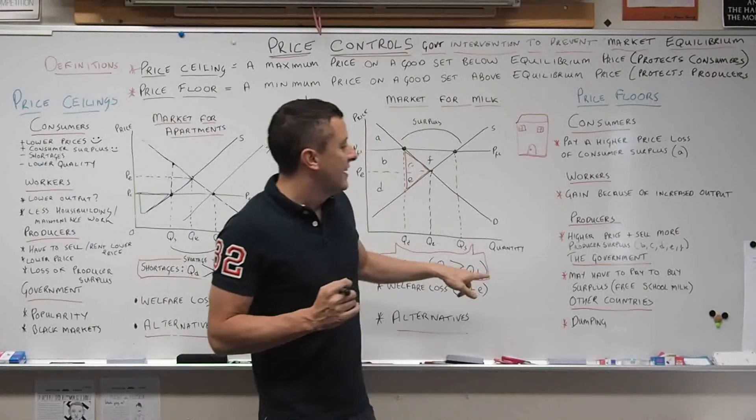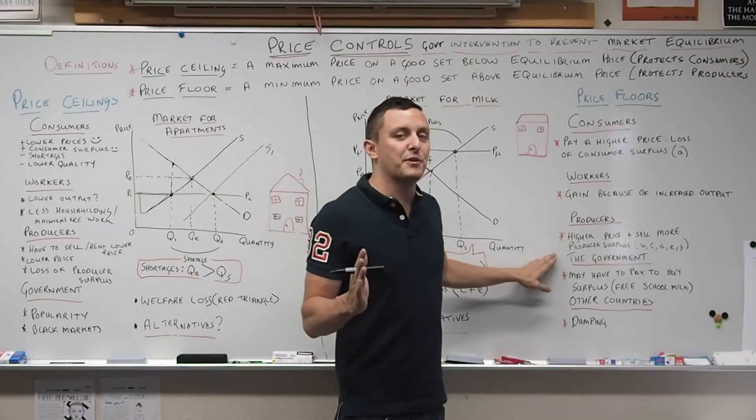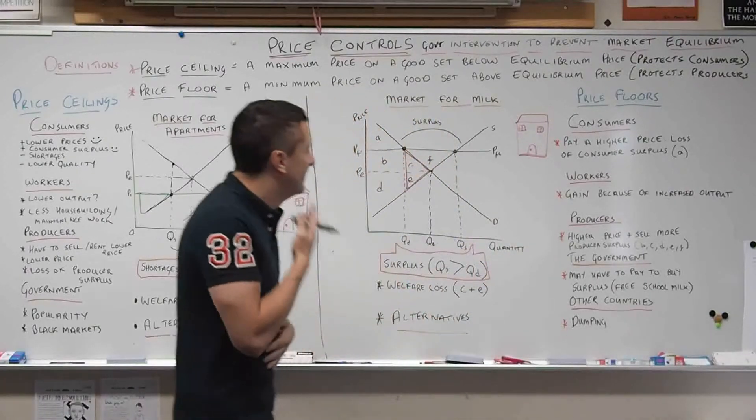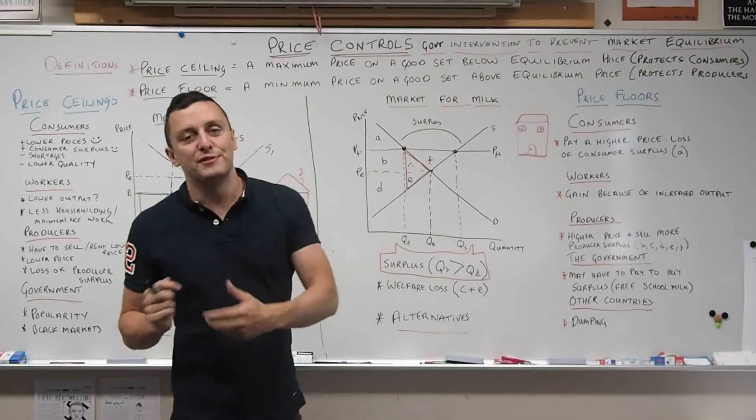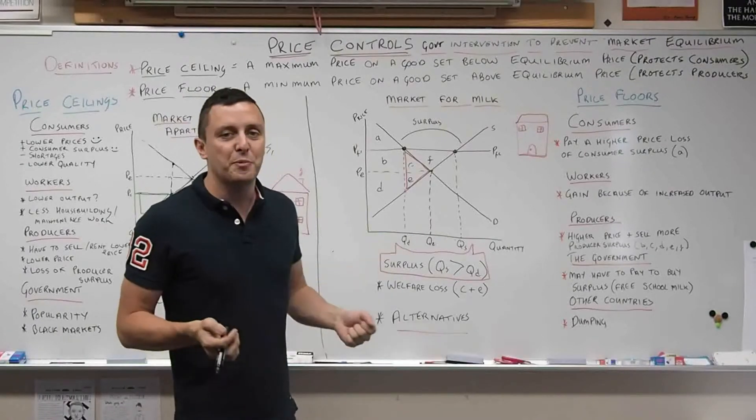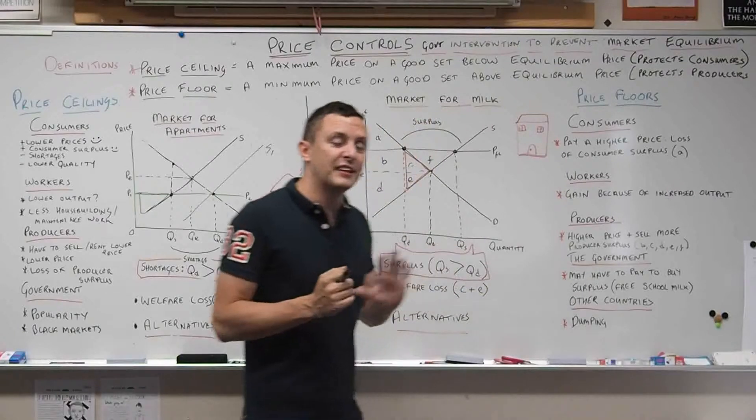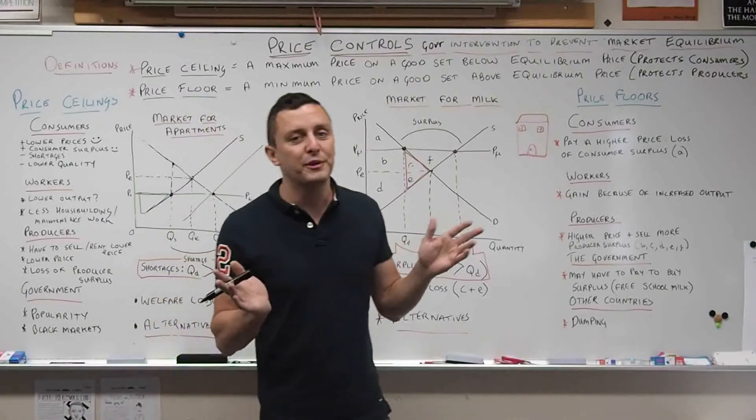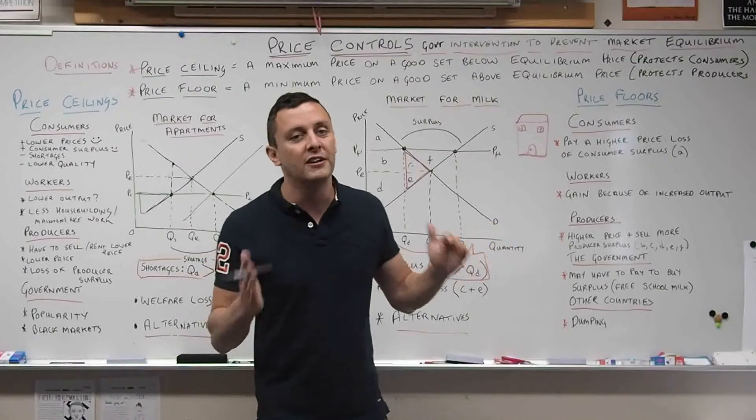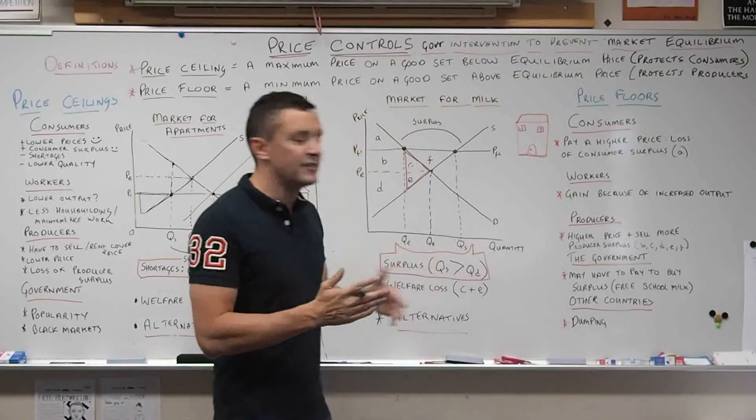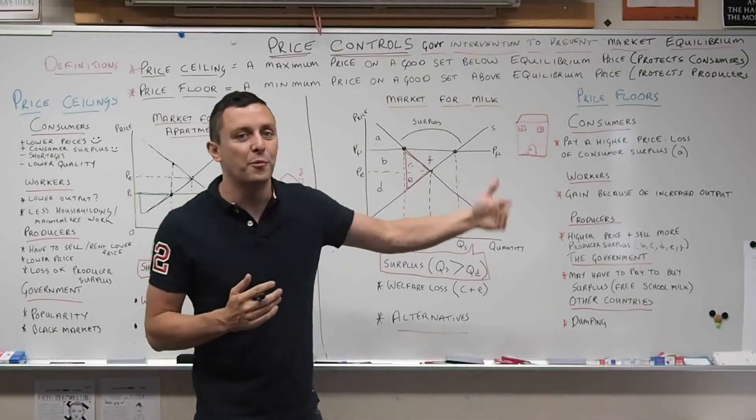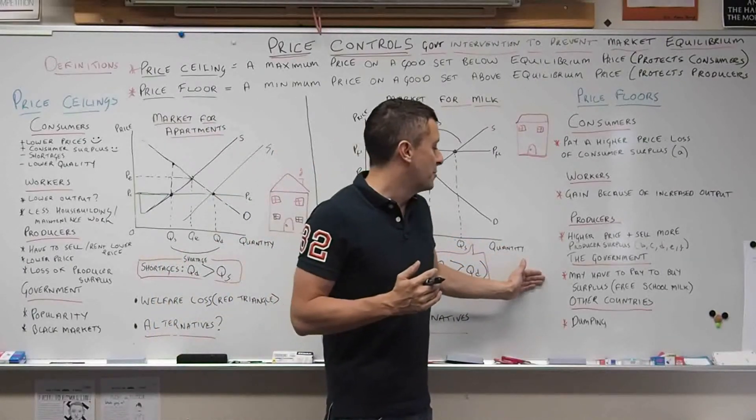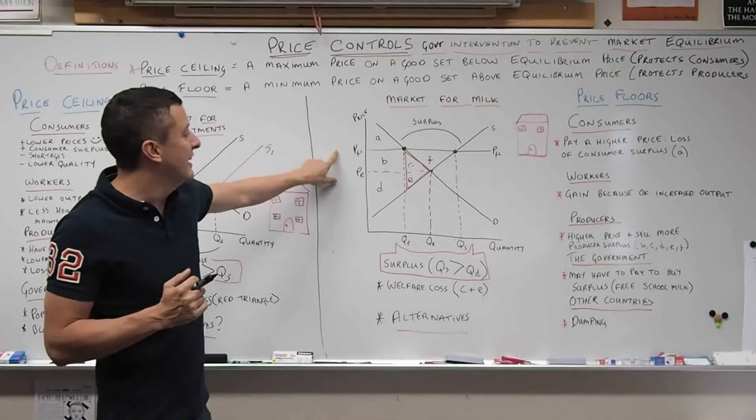Now moving on to the government. The government may have to buy this surplus because they're the ones who've caused it in the first place. What can they do to fix it? First thing they could do is to buy up the surplus. A very common policy is to give out free school milk. They advertise free school milk as helping kids be healthy and grow stronger. The real story behind all of those things is normally there's a massive surplus and they've got to get rid of it in some way. This can be very expensive for the government to buy up all that milk, probably at PFL price.